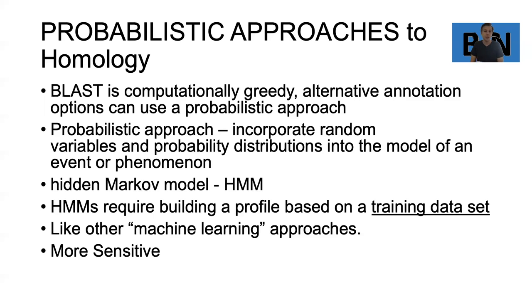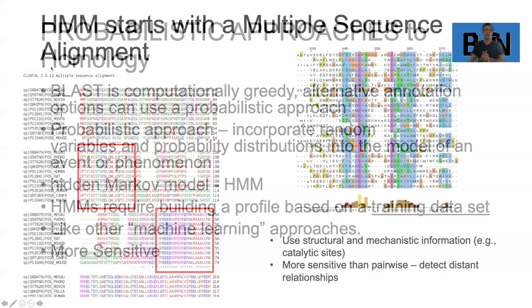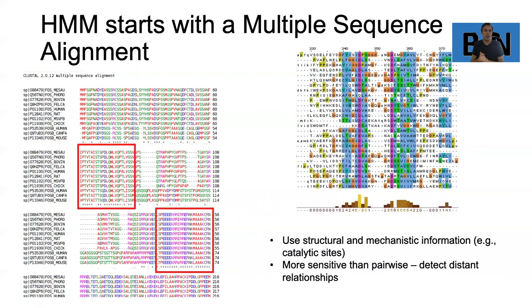HMMs require building a profile based on a training data set — that's really important, because it requires having some information before you build the profile used for searches. It's based on machine learning approaches, and one of the advantages is that it is very sensitive, allowing us to target very specific things and get back targeted matches that give us a lot of information. HMMs start with a multiple sequence alignment.